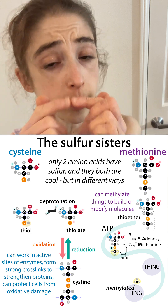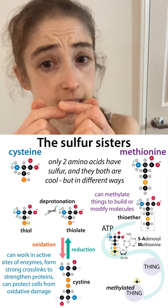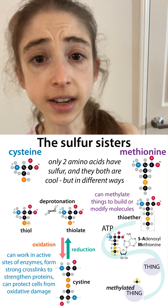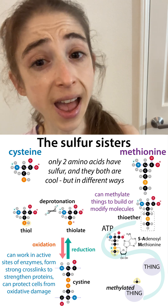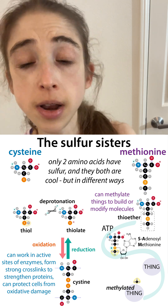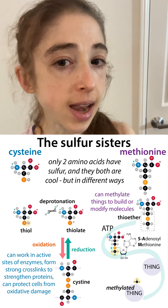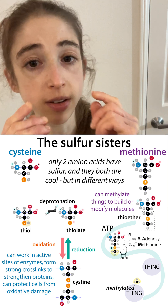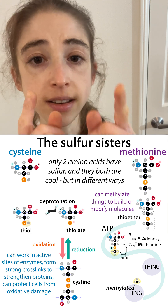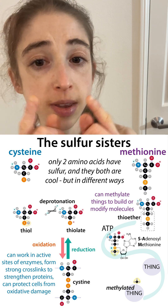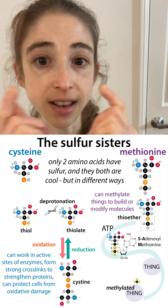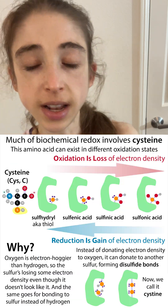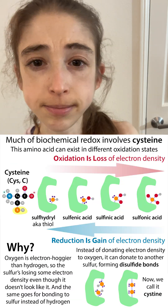Cysteine is able to form those covalent crosslinks, those disulfide bonds. It and methionine are the two amino acids that have sulfur, but in methionine that sulfur is kind of sandwiched between two carbons, whereas with cysteine it's out at the end in thiol groups that can then form crosslinks with one another. They can also get oxidized in other ways.